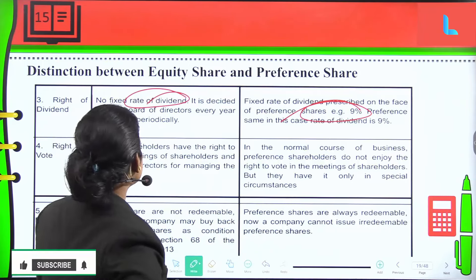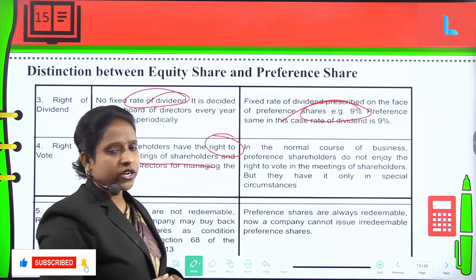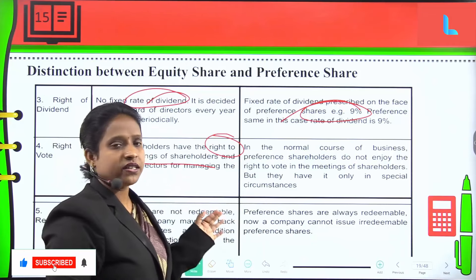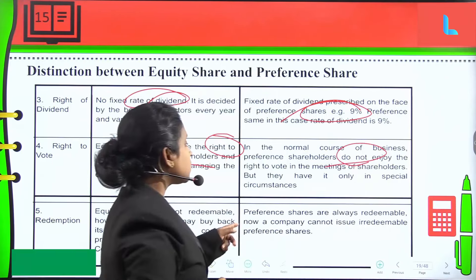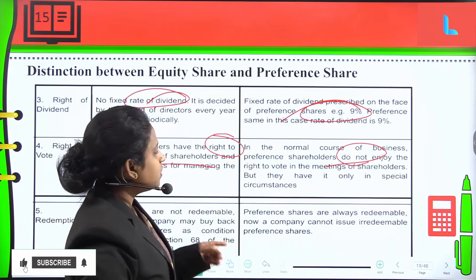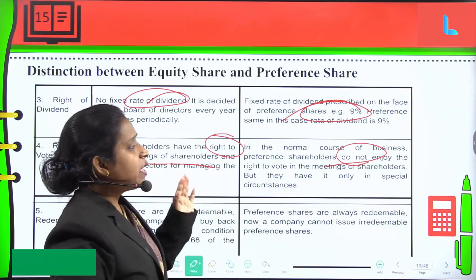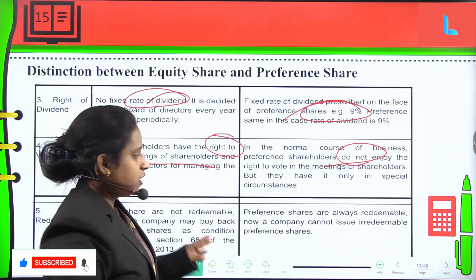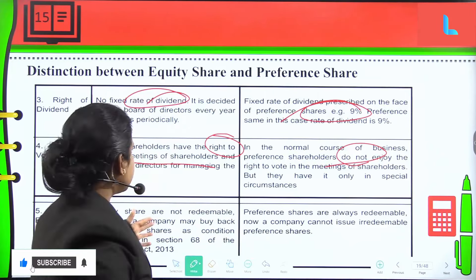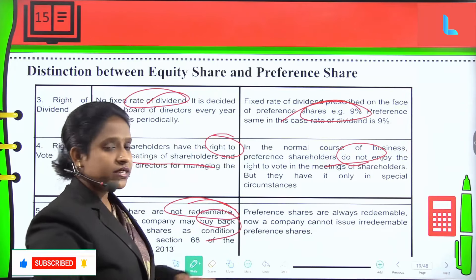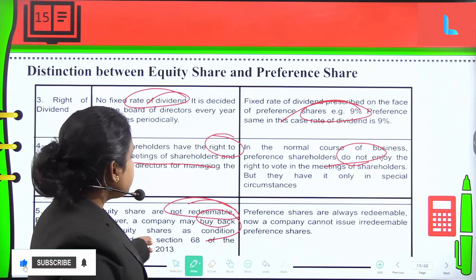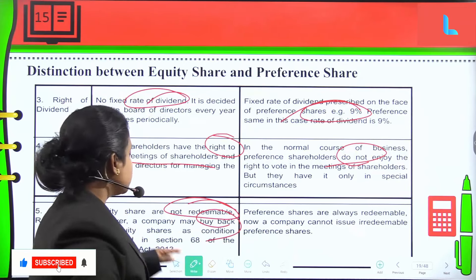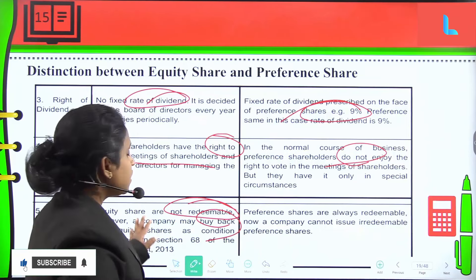Regarding voting rights: equity shareholders have the right to vote in meetings of shareholders. Preference shareholders, in the normal course of business, do not enjoy the right to vote in shareholder meetings — they have voting rights only in special circumstances. Regarding redemption: equity shares are not redeemable, meaning they cannot be returned. However, a company may buy back its equity shares under conditions prescribed in Section 68 of the Companies Act 2013.